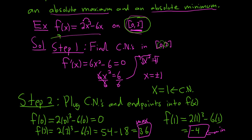To summarize: the extreme value theorem says that whenever you have a continuous function on a closed interval, you're always going to have an absolute max and an absolute min. To find them, take the critical numbers that are in your interval and plug them in along with the endpoints into your original function. The biggest answer is the max and the smallest is the min.